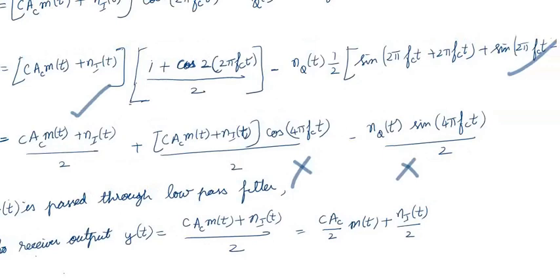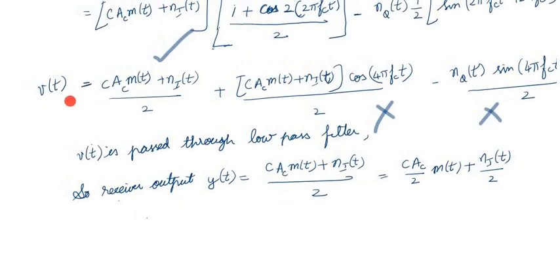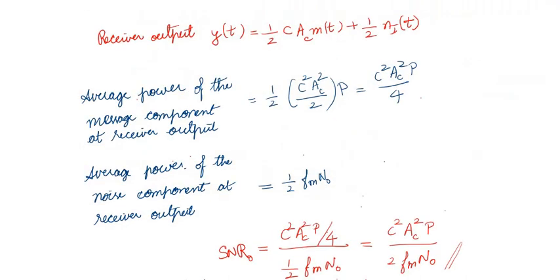After multiplication, v(t) has three terms. Since v(t) passes through a low pass filter, which only permits low frequencies, the terms at frequency 2fc are blocked. Only the first term survives at the receiver output: c·Ac·m(t)/2 + n_i(t)/2. This is the receiver output y(t).